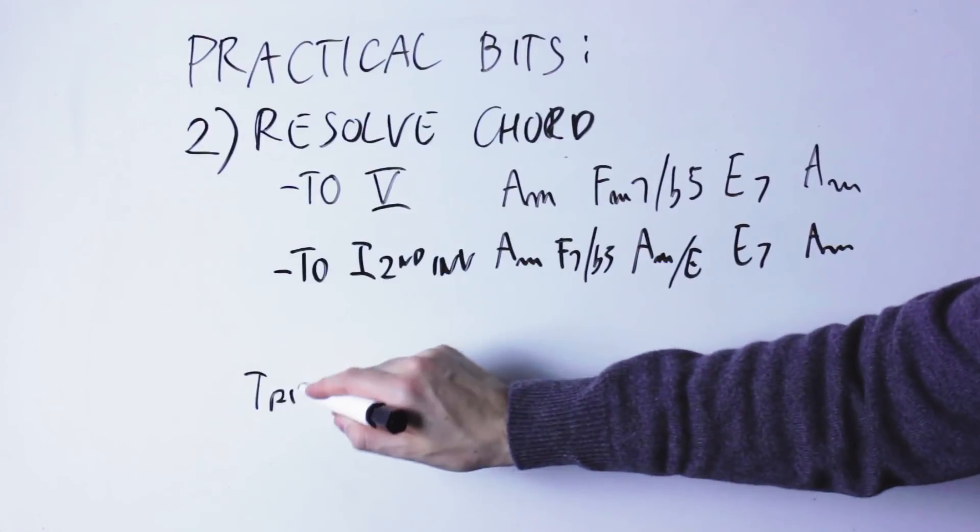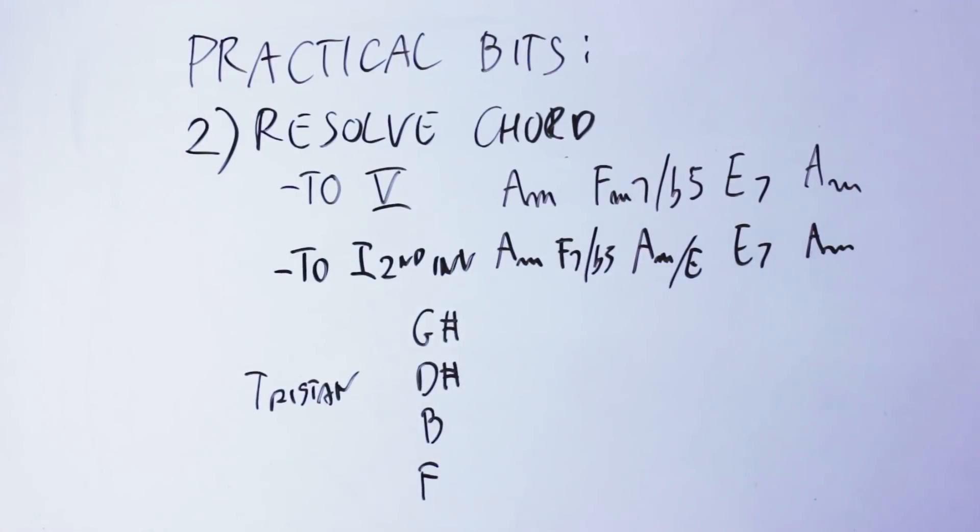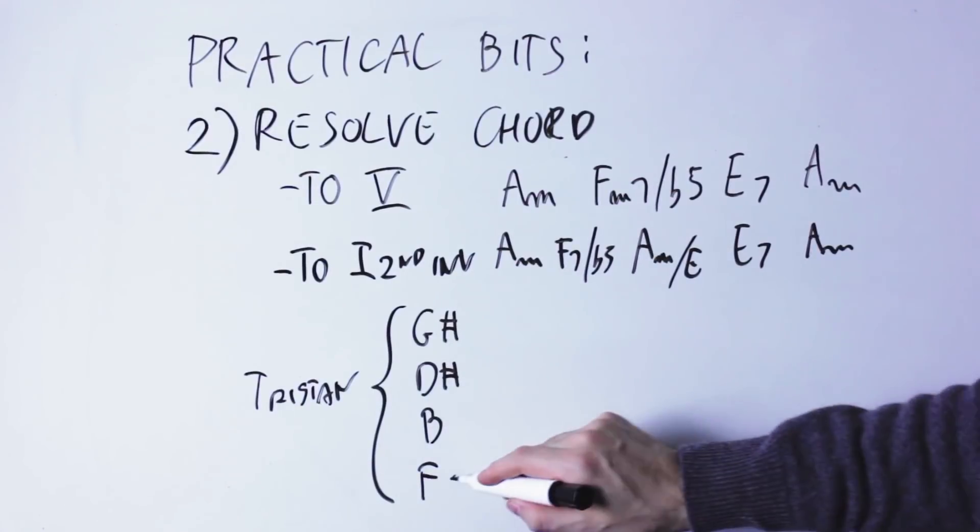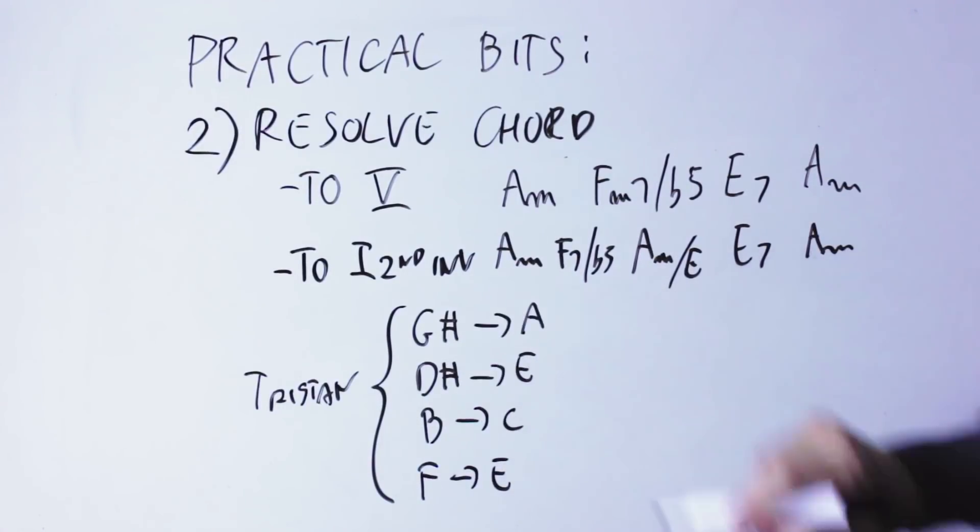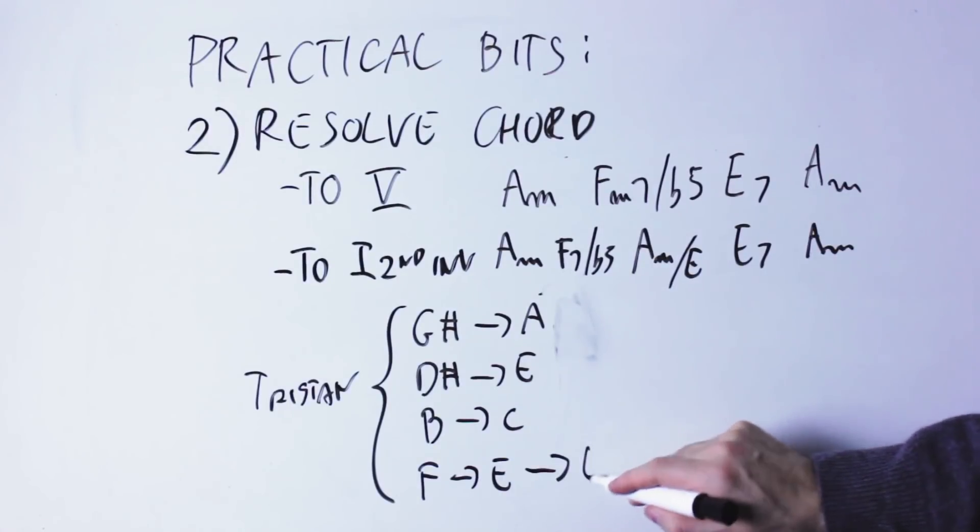In this case, the notes move as follows. F goes down to E, B goes up to C, D sharp up to E, G sharp up to A, and this creates the A minor in second inversion.